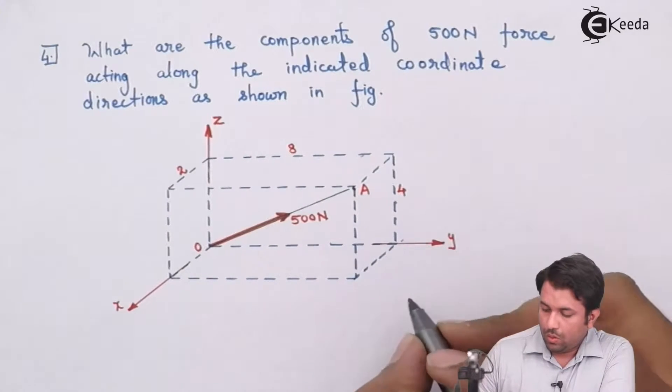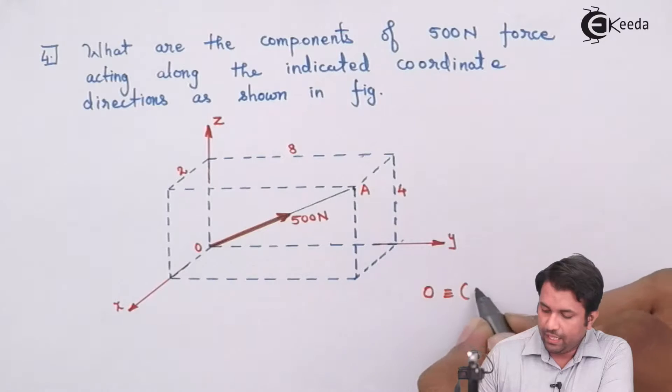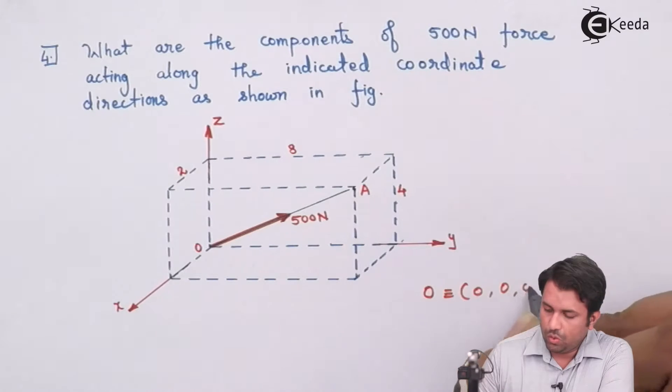Now origin, the coordinates will be 0, 0, 0.